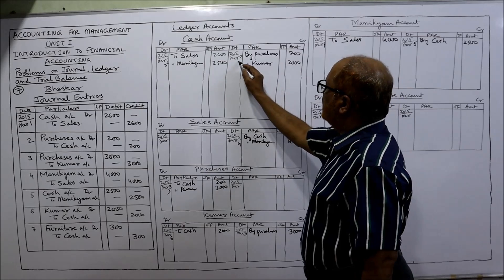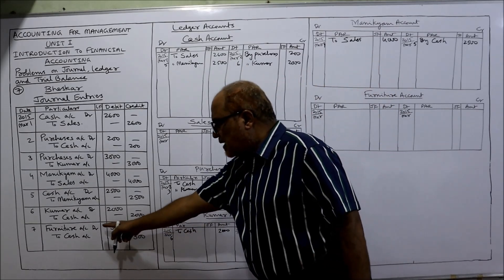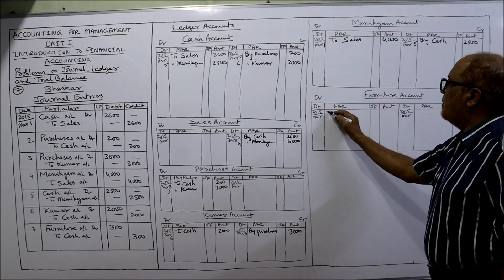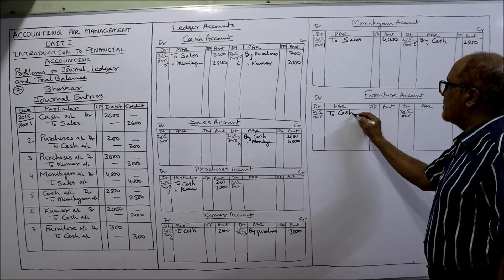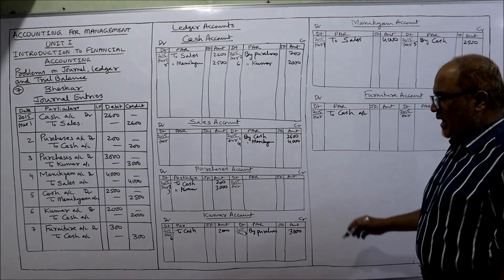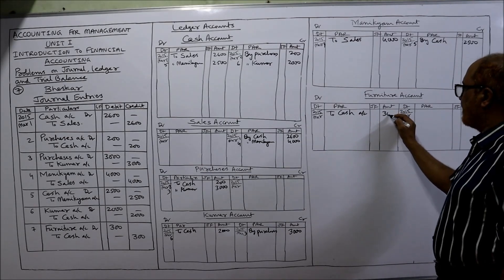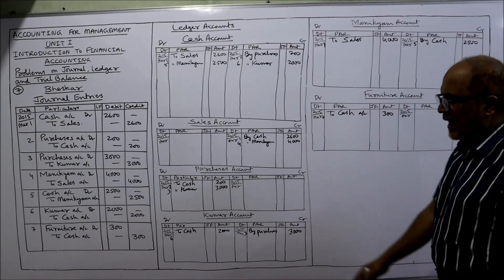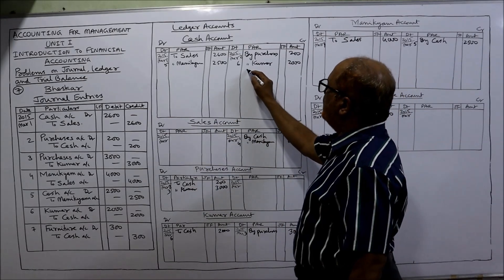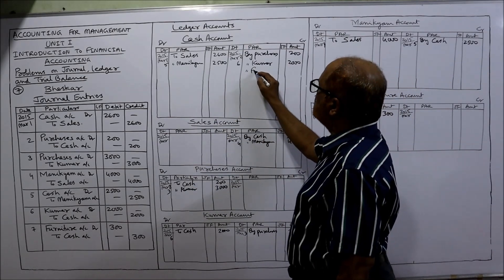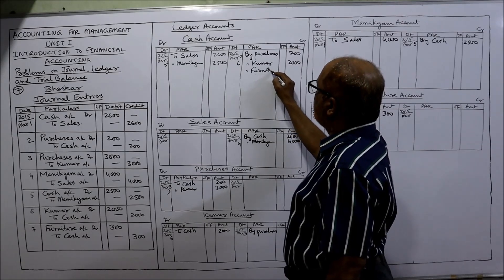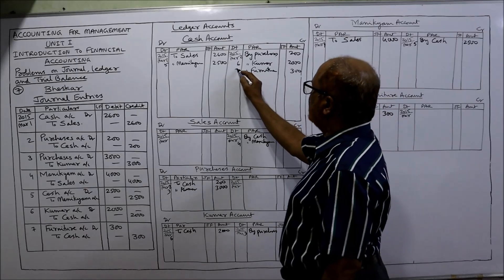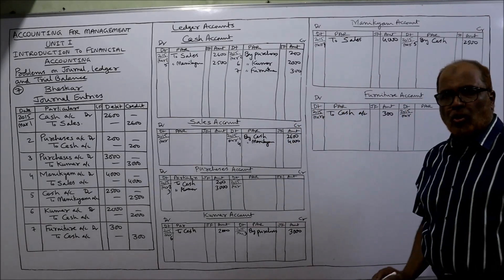Last transaction — Furniture account Dr. to Cash. Furniture account debit side: 'To Cash — 300', date is 7th. Cash account credit side: 'By Furniture — 300', date is 7th. That's all — all transactions have been posted into the ledger accounts.